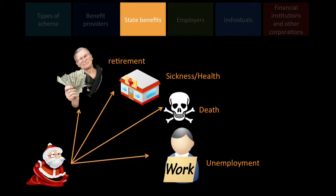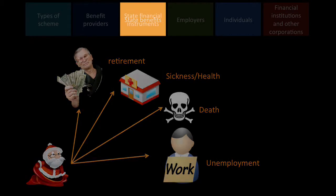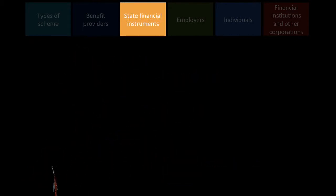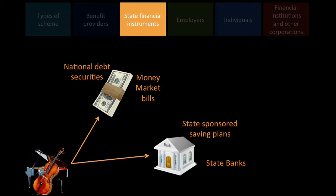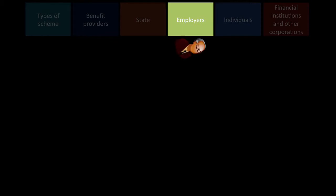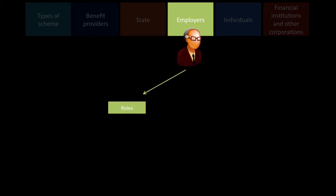Some of the benefits the state can give include retirement, hospital and medical care, debt benefits like UIF. The state can also offer financial instruments such as bonds, national debt securities, money market bills, state-sponsored saving plans, and there are even some state banks.